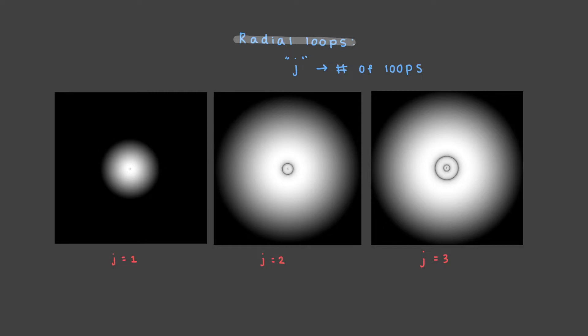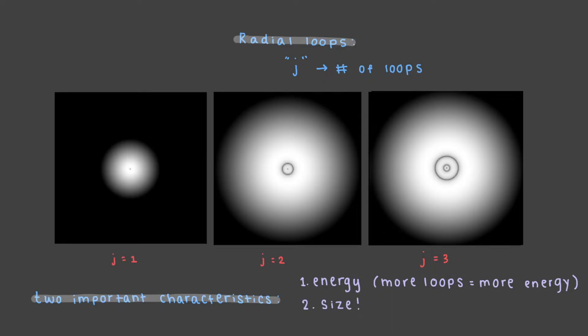Right away, you'll notice that in 3D electron waves, the number of loops tells us about two important characteristics of the wave. The first one we know: energy. But you'll also notice that with 3D waves, size depends on the number of loops.